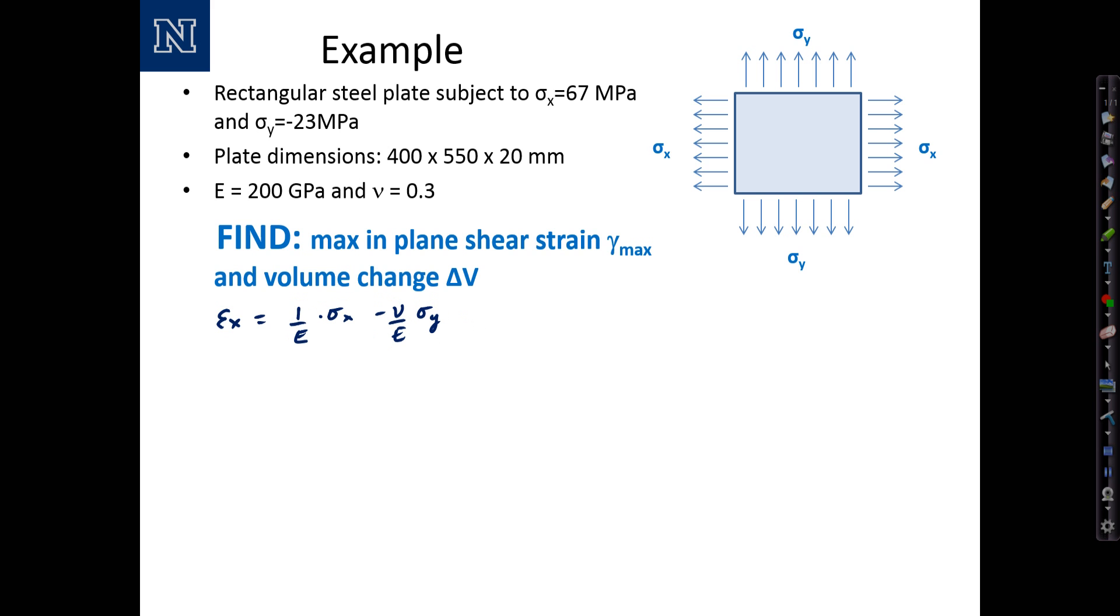That equation for generalized Hooke's Law, the stress to strain form, is fairly easy to remember. So 1 over elastic modulus, I'm going to convert to megapascals, 200,000 megapascals times sigma x, 67 megapascals. So notice that leads to a unitless quantity, which is what I want for strain, minus Poisson's ratio, 0.3 over e, 200,000 megapascals times sigma y, which is negative 23 megapascals. The double negative makes a positive and so this computes to a positive number 3.695 times 10 to the negative 4 and it's unitless. That is the result for epsilon x.